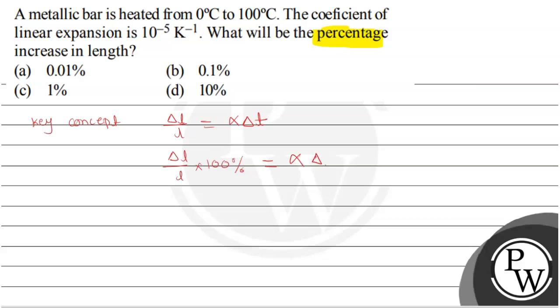Now what is alpha? Alpha is the coefficient of thermal expansion. And what is delta T? Delta T is the change in temperature. From this question, delta T is equal to 100 minus 0 which is equal to 100 degrees Celsius. And alpha, the coefficient of thermal expansion, is 10 raised to minus 5 per Kelvin, coefficient of linear thermal expansion.